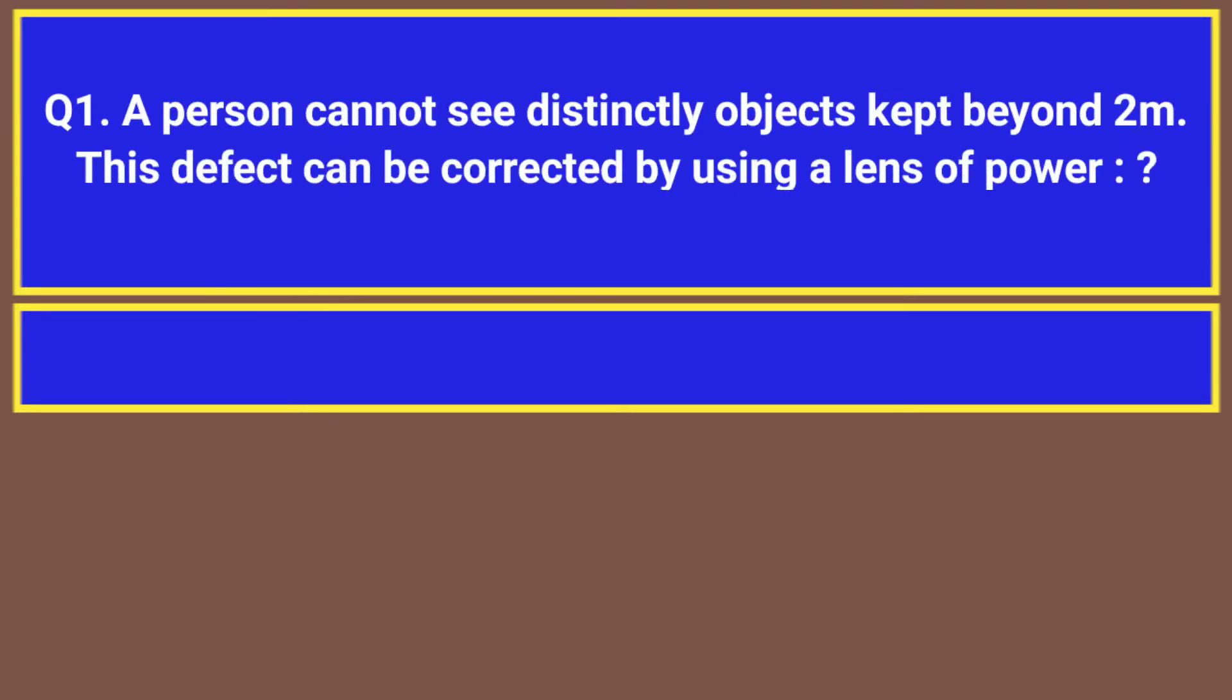A person cannot see distinctly objects kept beyond 2M. This defect can be corrected by using a lens of power.